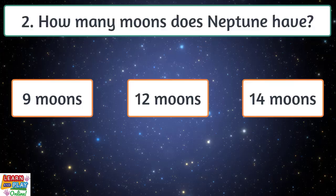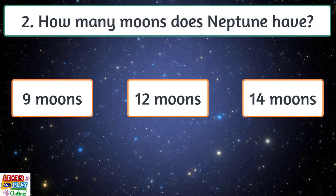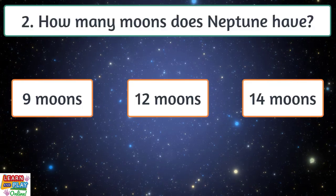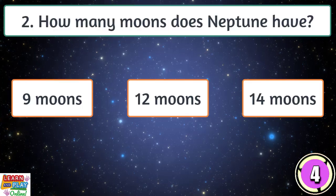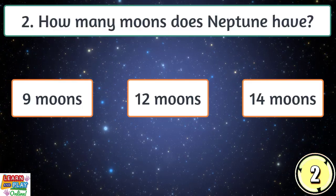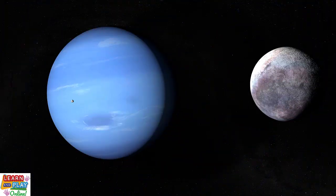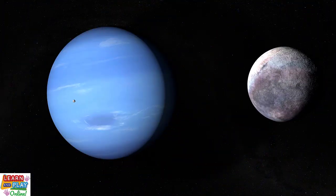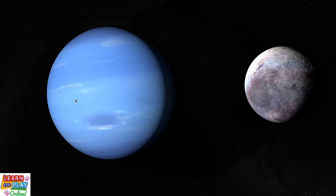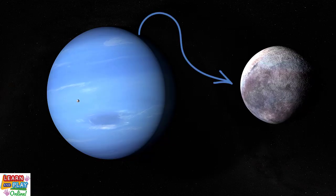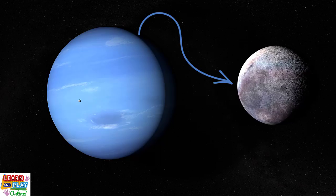Question two. How many moons does Neptune have? Nine moons, 12 moons, or 14 moons? Up until the date of which this video was published, Neptune has 14 moons. Its largest moon is called Triton, and it is almost as big as our very own moon here on Earth.